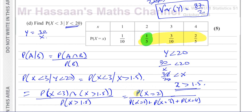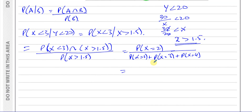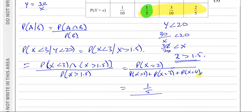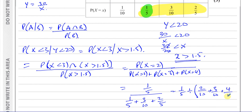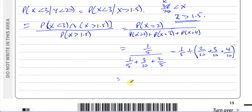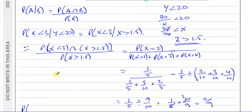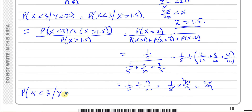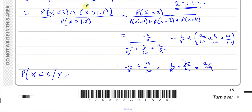So the numerator is P(X = 2) = 1/5. The denominator is P(X > 1.5) = P(X = 2) + P(X = 3) + P(X = 4) = 1/5 + 3/10 + 2/5 = 2/10 + 3/10 + 4/10 = 9/10. Therefore the answer is (1/5) ÷ (9/10) = (1/5) × (10/9) = 2/9. So P(X < 3 | Y < 20) = 2/9.